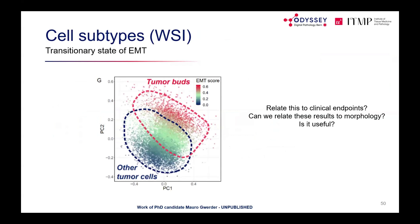The multiplex data provides compelling evidence for a 'hybrid EMT' state in tumour buds — an incomplete epithelial-to-mesenchymal transition where buds have not fully lost their epithelial component. This partial transition may be necessary for buds to later reattach and form metastases. Results on clinical endpoint correlations are pending publication.